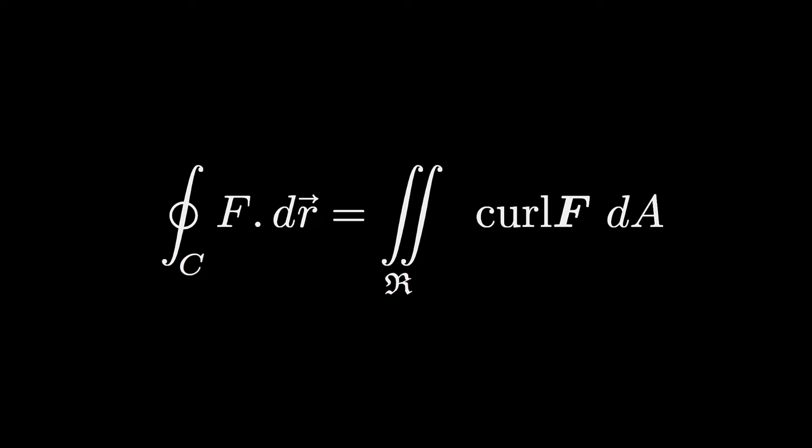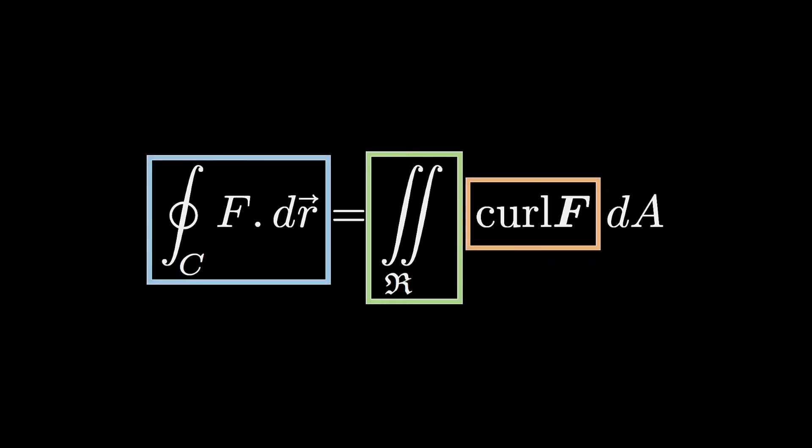This is Green's Theorem. We'll first be learning this notation, curl of F, then this notation where this indicates a path integral over a path C, and this notation where this indicates a double integral over a region R. We'll be learning all these notations one by one and then build up to the full equation. It is required that you know some calculus, a little bit of integrals and derivatives and so on. So let us begin.